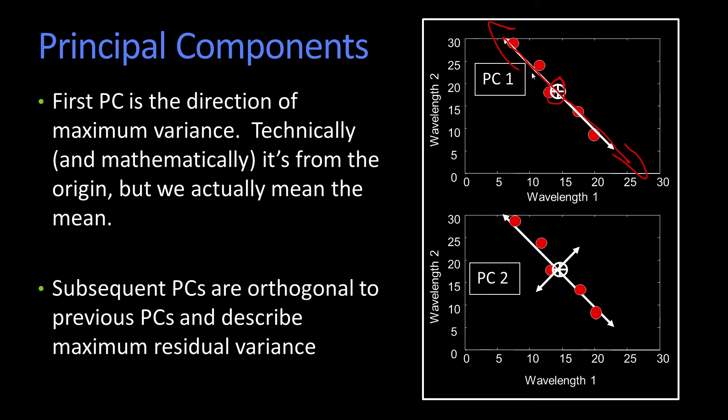The subsequent principal components are perpendicular, orthogonal to the previous ones, and describe the next greatest amount of variance.